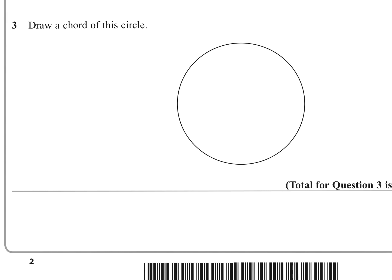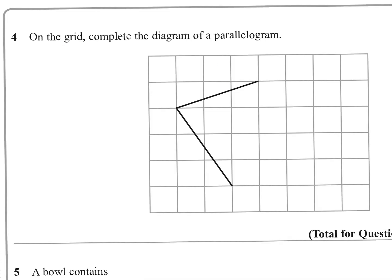Question three: draw a chord of this circle. A chord is a straight line going from one point on the circumference to another. You could go from here to here — that's a chord. You could even go right through the centre, which would be a diameter, but it's also a chord. Any straight line from one point on the circumference to another is a chord.